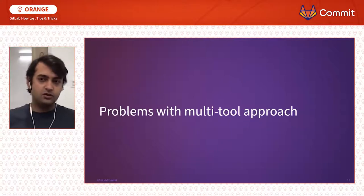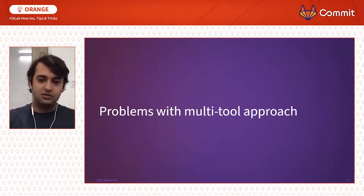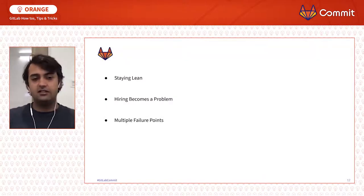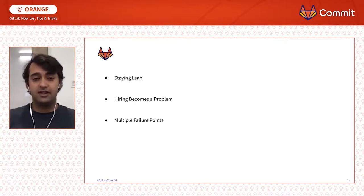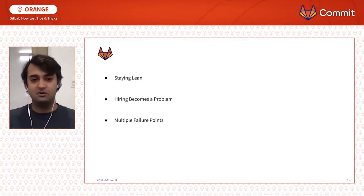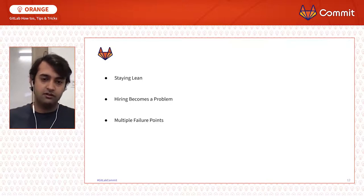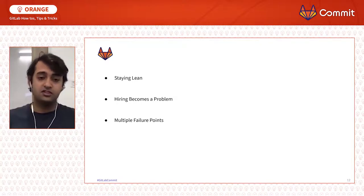Before getting into what GitLab provides for small companies and non-profits with low budgets, some problems with a multi-tool approach: you can't stay lean. With multiple DevOps tools at different stages, it's very hard to find someone with expertise across all of them. Hiring becomes a problem because the budget is low and people with that breadth of knowledge command top-of-market salaries. There are also so many failure points — connecting Tool A to deployment Tool B to development Tool C to testing — making it hard to debug code or fix production issues.